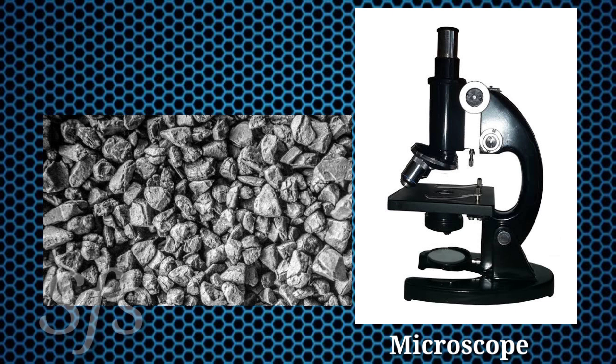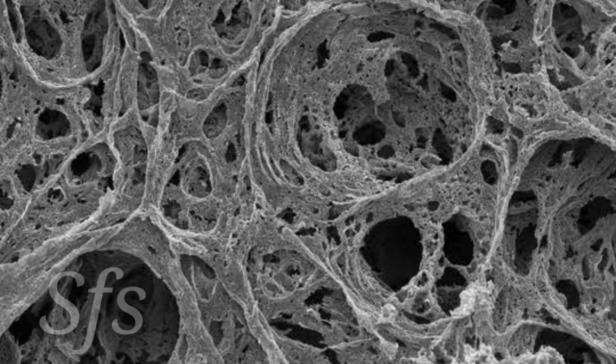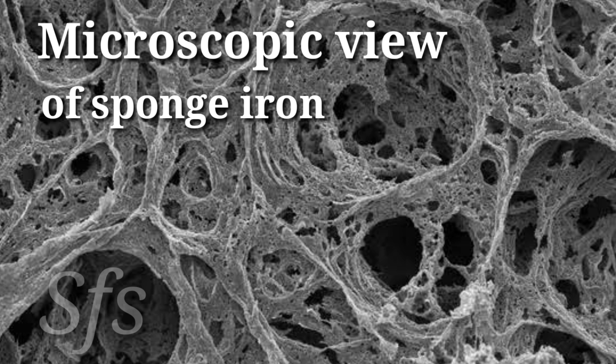Why is this reduced iron called sponge iron? When we see sponge iron under a microscope, its microscopic view shows a sponge-like structure having a number of voids and gaps, and a web-like structure is obtained. So we call this product sponge iron — that is the main reason why it is named sponge iron.